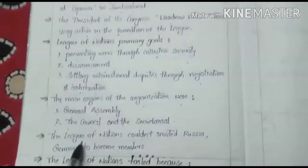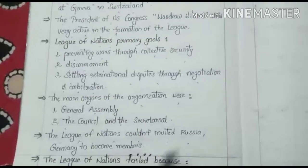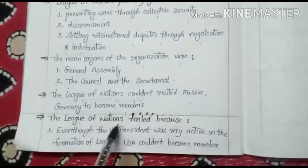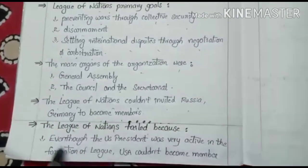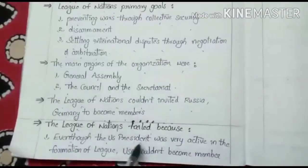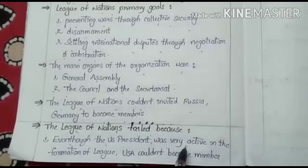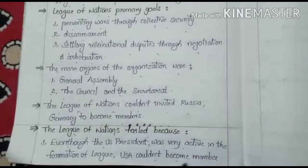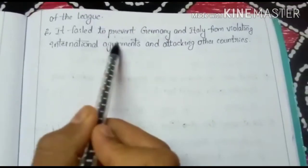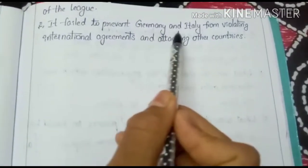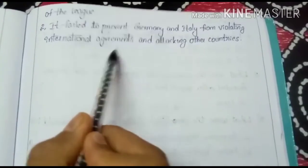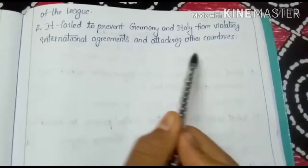The League of Nations could not invite Russia and Germany to become members. The League of Nations failed because even though the U.S. President was very active in the formation of the League, the USA could not become a member. It also failed to prevent Germany and Italy from violating international agreements and attacking other countries.